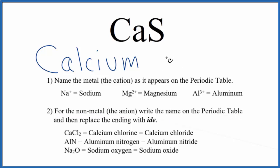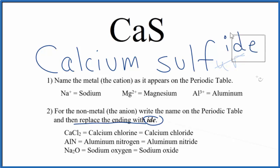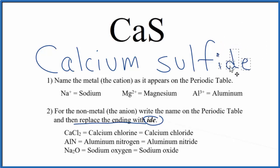We'll start with a lowercase s. Then we're going to replace the ending with -ide. So instead of -ur, we're going to call this -ide. So the name for CaS is calcium sulfide.